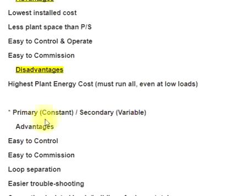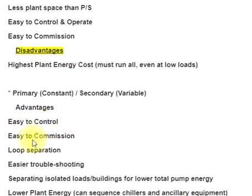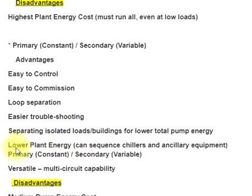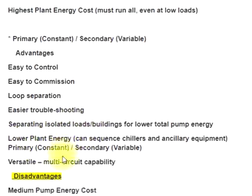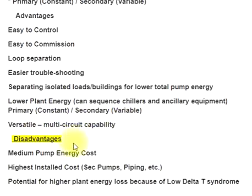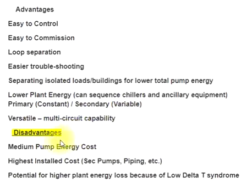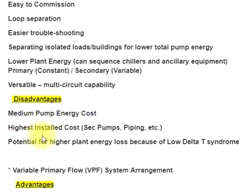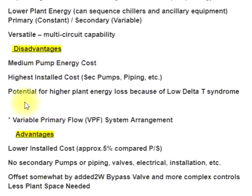Primary constant, secondary variable advantages: easy to control, easy to commission, loop separation allows easier troubleshooting and isolating separated loads and buildings, lower total pump energy, lower plant energy for chillers and ancillary equipment. Primary constant, secondary variable is versatile with multi-circuit capability.